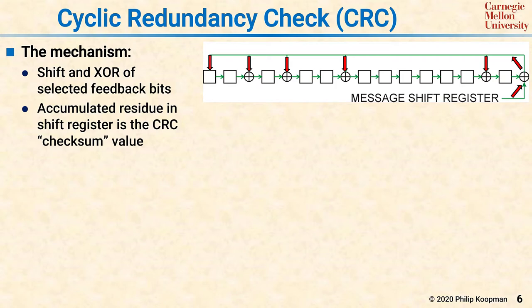From this picture, you can see the red arrows are where the message shift register value is combined with the bottom bit, and then XORed back in to various stages of the shift register. That performs mixing to scramble the bits as you go.